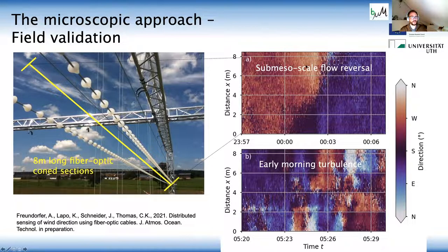The first one is the flow reversal from westerly to easterly directions by a submesoscale actually moving through the domain. And you see how very nicely fine grained and sharp this transition of the wind directions can be actually resolved with a fiber optic technique.